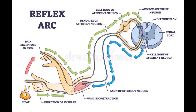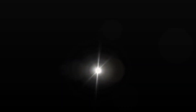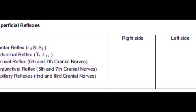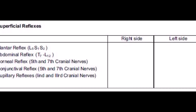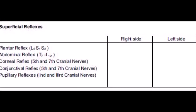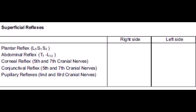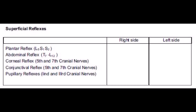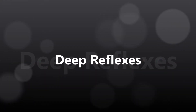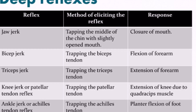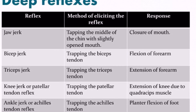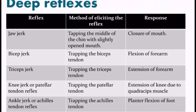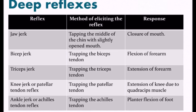Superficial reflexes are: plantar reflex, abdominal reflex, corneal reflex, conjunctival reflex, and pupillary reflexes. Don't forget to remember their root values. Deep reflexes are: jaw jerk, biceps, triceps, knee jerk, and ankle jerk. Plantar reflexes also come under this category.